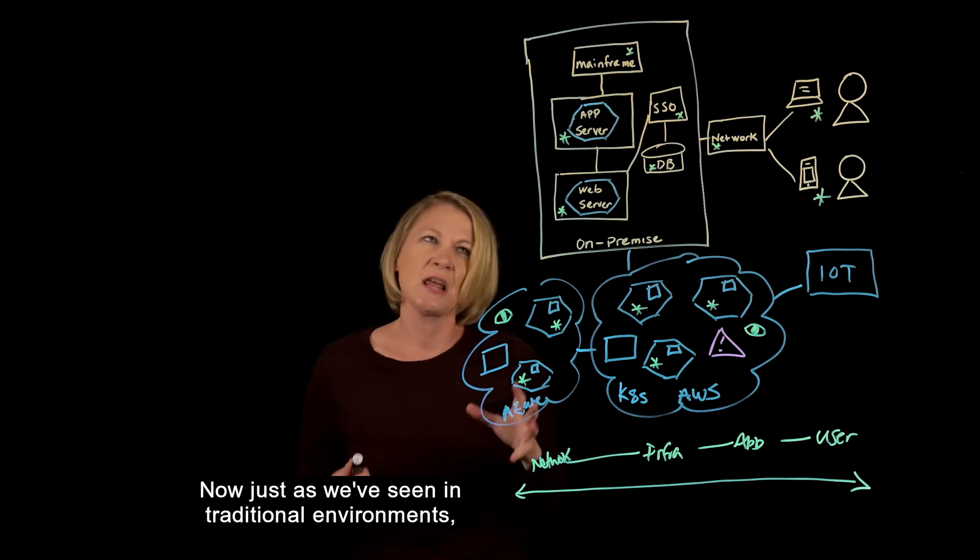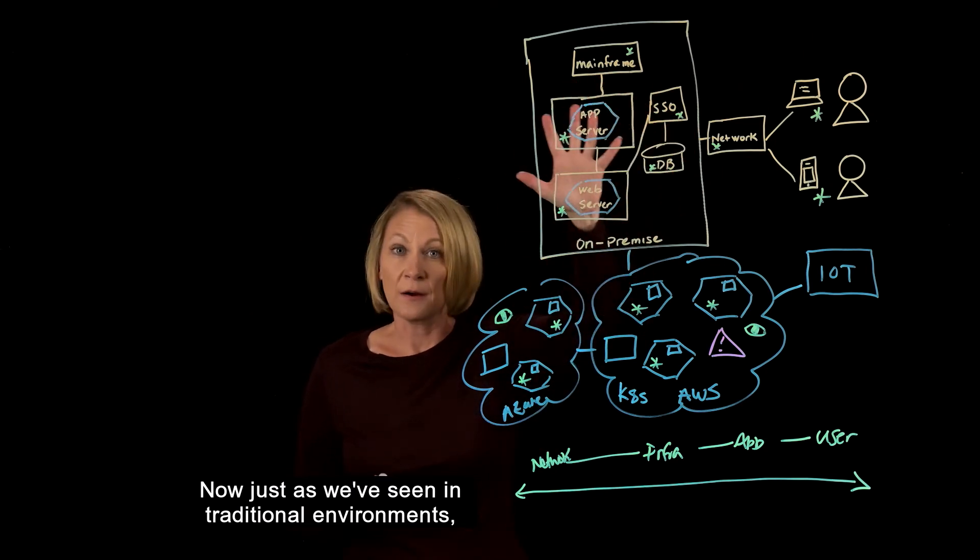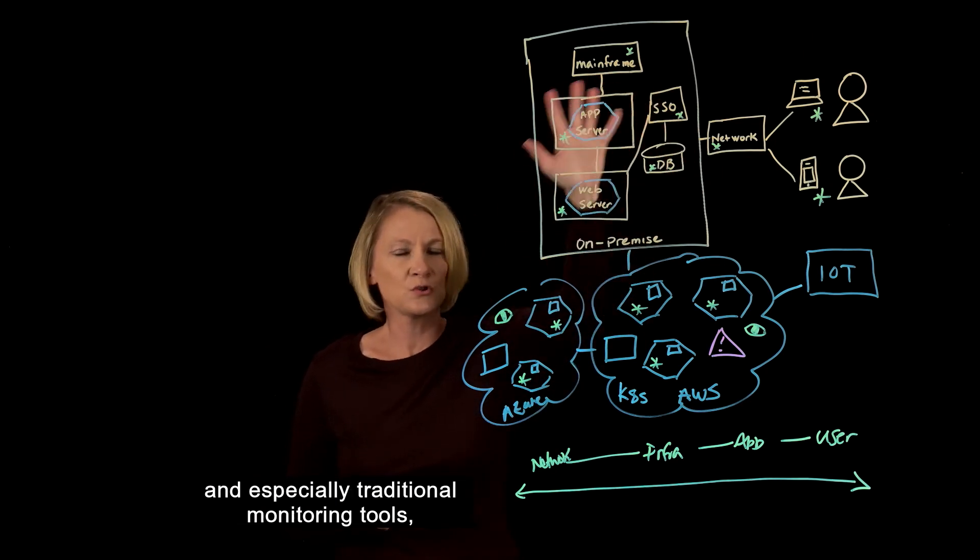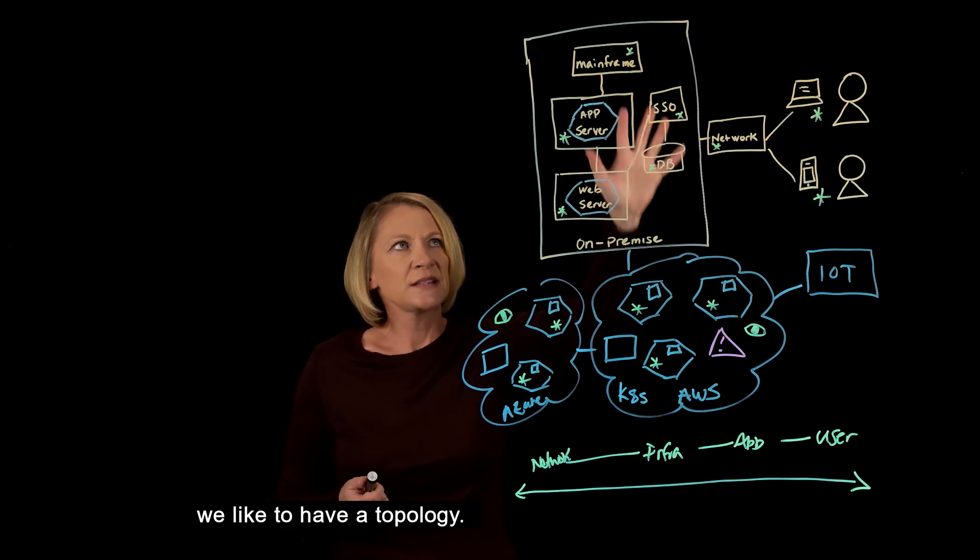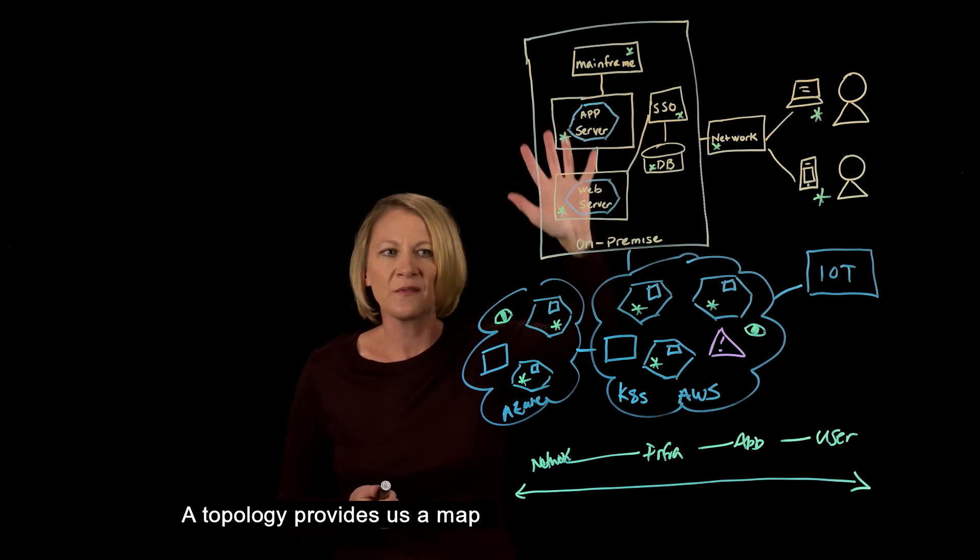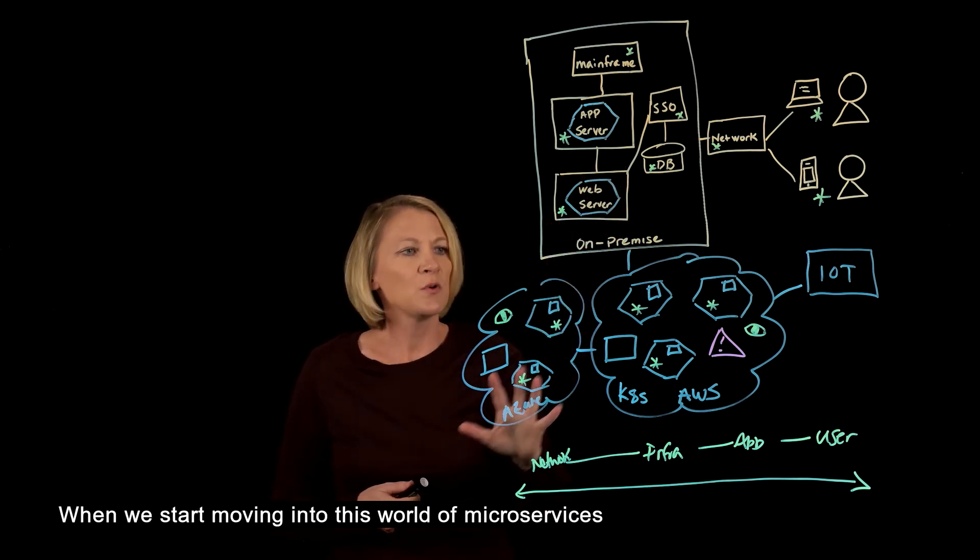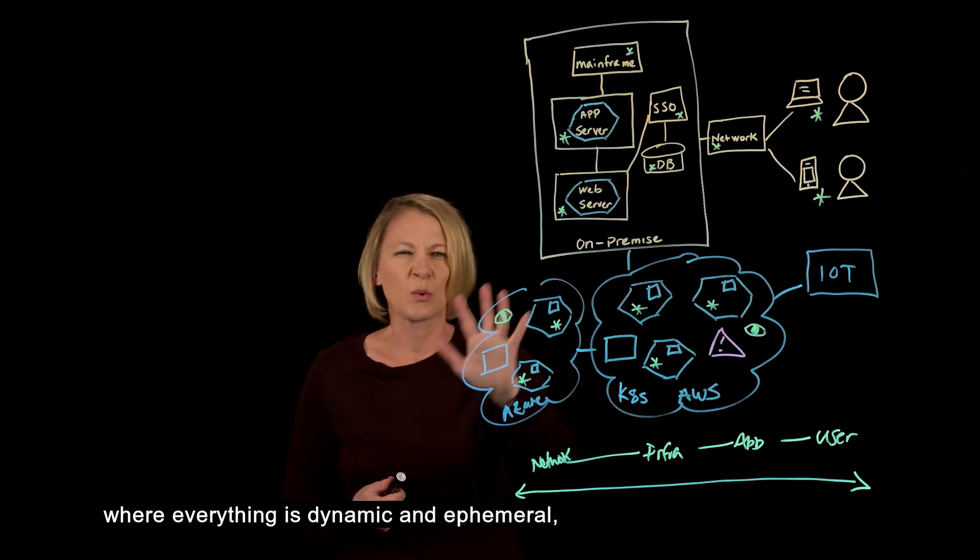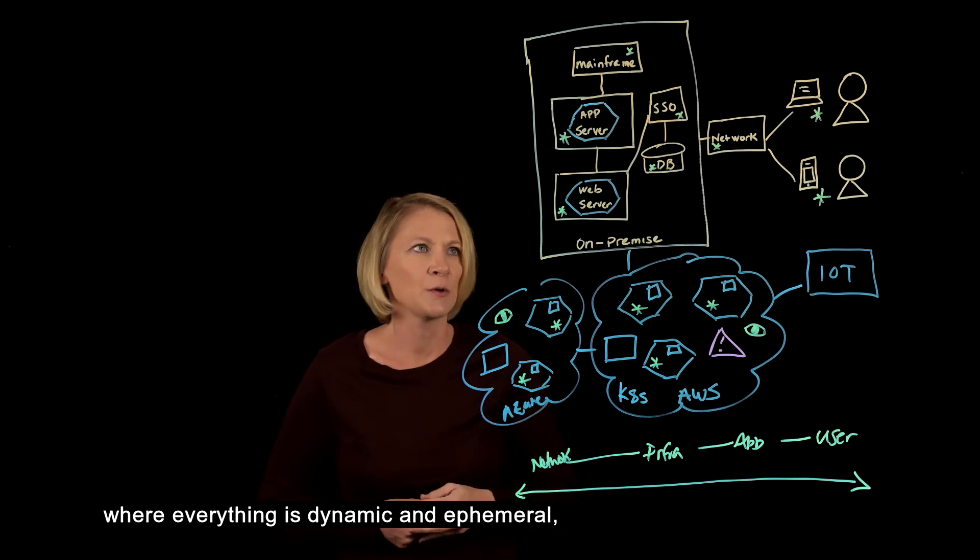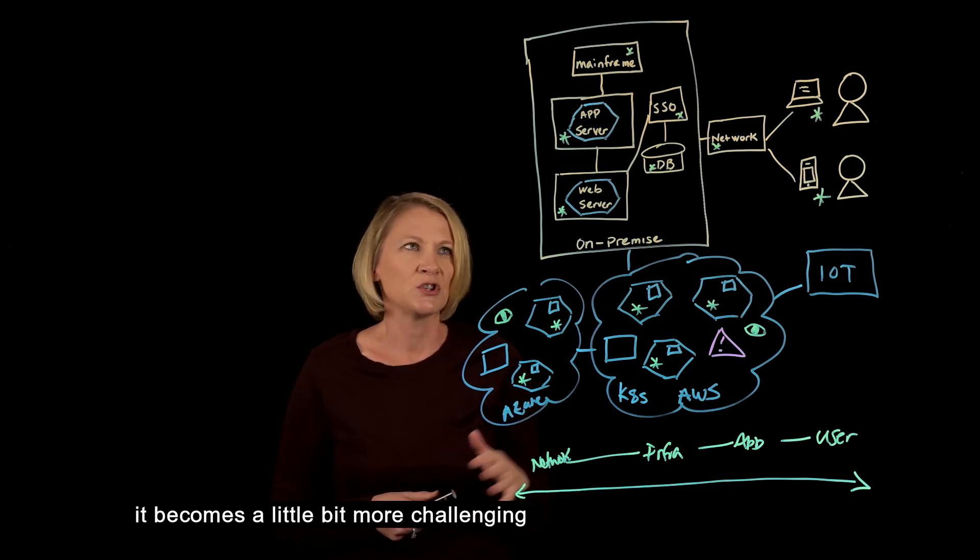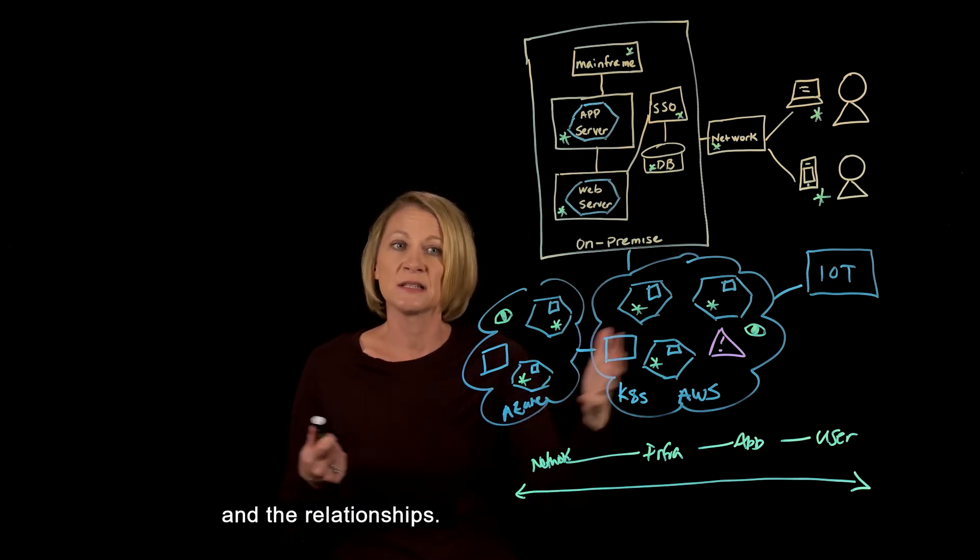Just as we've seen in traditional environments and especially traditional monitoring tools, we like to have a topology. The topology provides us a map that gives us a point of reference. When we start moving into this world of microservices where everything is dynamic and ephemeral, it becomes more challenging to understand the dependencies and the relationships.